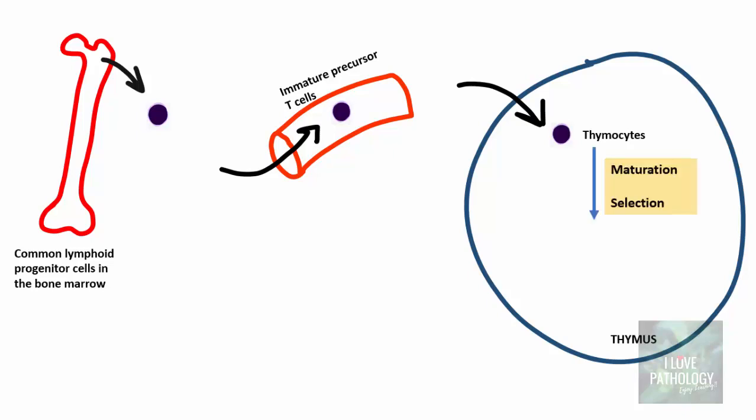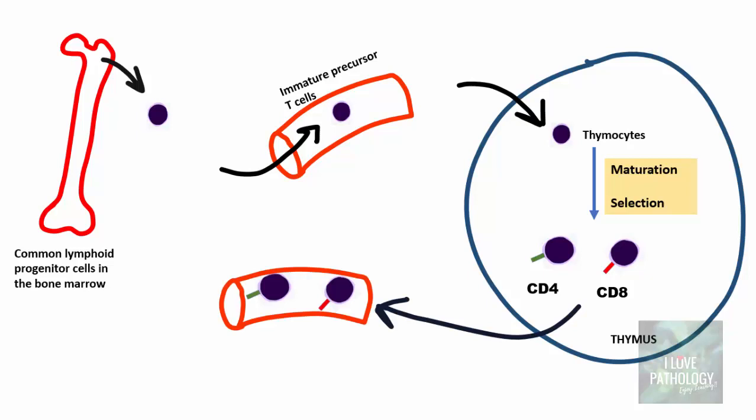Thymocytes mature to become mature peripheral T cells. There is also a process called selection — positive and negative selection — where unwanted cells are destroyed and only those cells needed for our body are retained. After maturation and selection, lots of receptors are expressed onto the thymocytes. If it is the CD4 receptor, it is called a CD4 positive T cell; another type is the CD8 positive T cell. After maturation, these cells enter the peripheral pool and are referred to as peripheral T cells, which can be CD4 positive or CD8 positive.